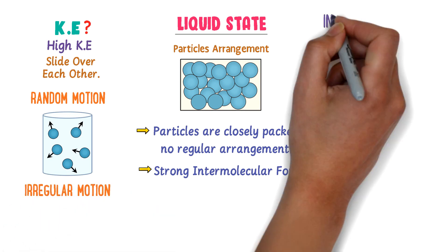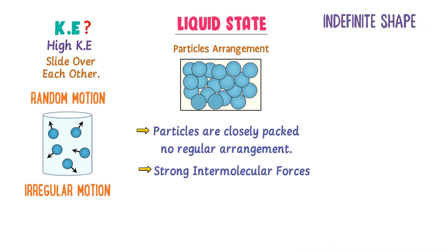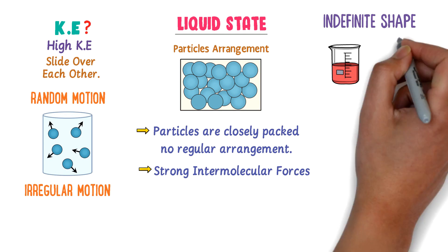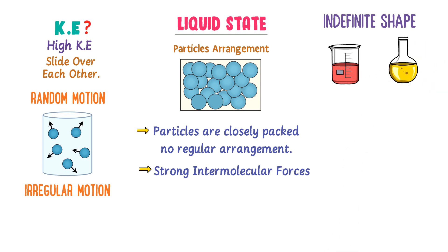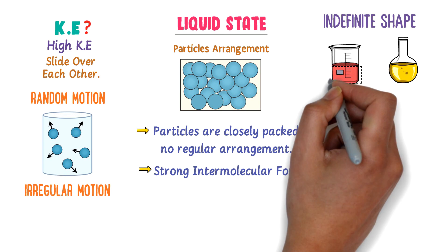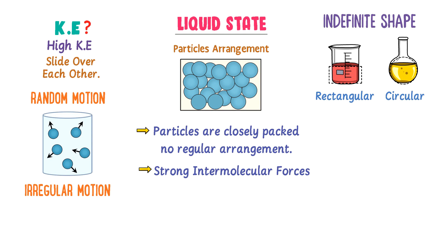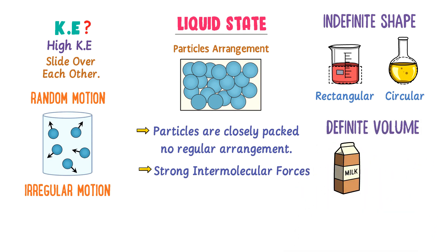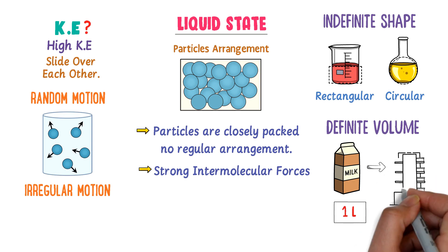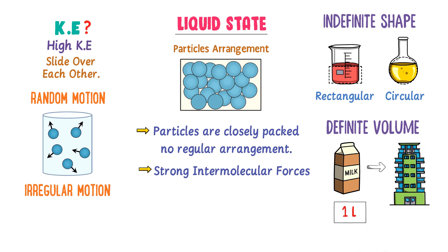On the other hand, liquids have indefinite shape. For example, consider one liter of water in this object and one liter of water in another object — in the first object the shape of water is rectangular, while in the second it is circular or spherical. So water changes its shape in different containers. However, liquids have definite volume — if you buy one liter of milk in the market and bring it home, the volume does not change; it is still one liter.